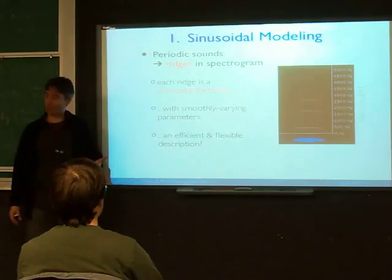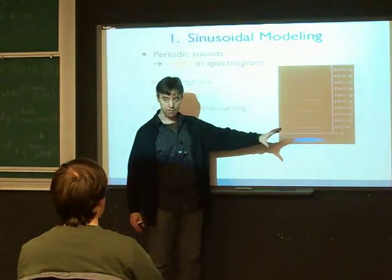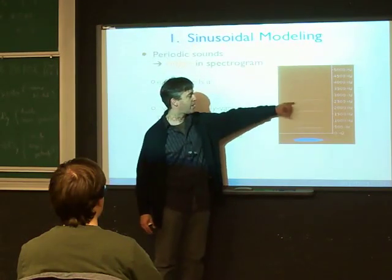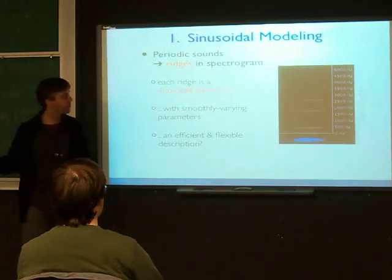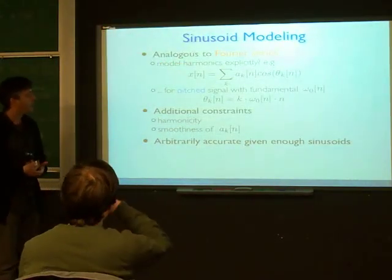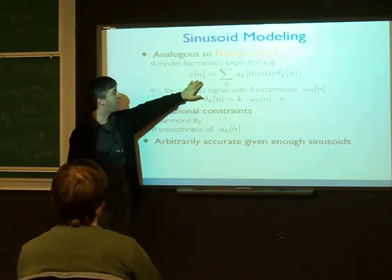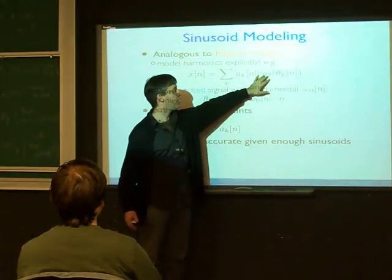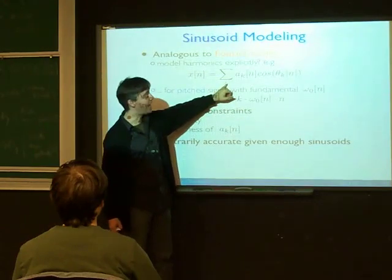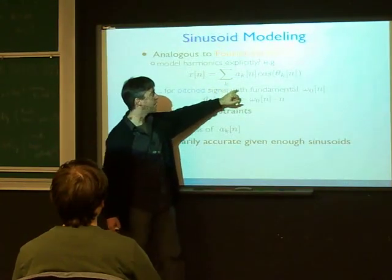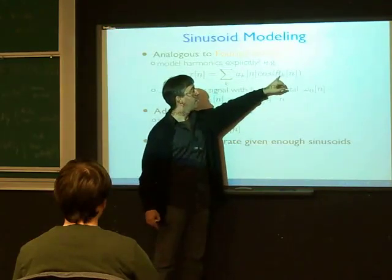That seems like a tempting idea — rather than representing the sound as a waveform where all the components are superimposed, we could describe each component individually, which might be powerful and useful for manipulating the sound. This is really just the Fourier series: taking a time-domain waveform and representing it as a sum of sinusoids with particular amplitudes. Here we have a discrete set of K sinusoids, where K indexes the set, but we're allowing the amplitudes to vary with time.